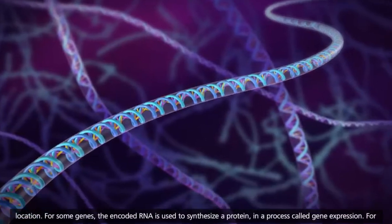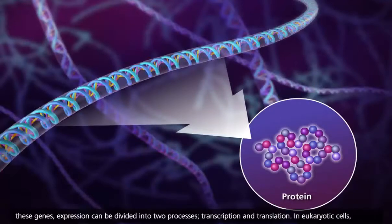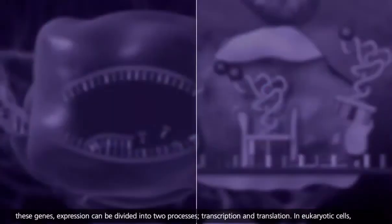For some genes, the encoded RNA is used to synthesize a protein in a process called gene expression. For these genes, expression can be divided into two processes.